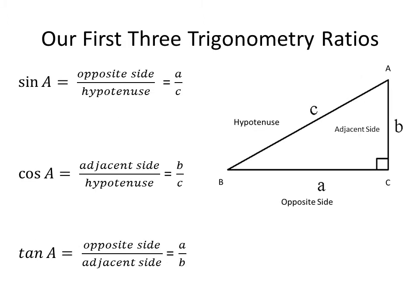Now remember, sine, cosine, and tangent go back to our very first lesson — they are simply the ratios of the differences between the sides. The sine is the ratio between the opposite side and the hypotenuse. The cosine is the relationship between your adjacent side and the hypotenuse. And the tangent is the relation between the opposite side and the adjacent side.